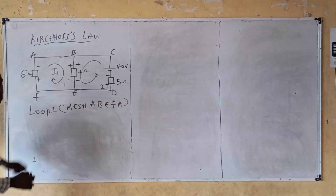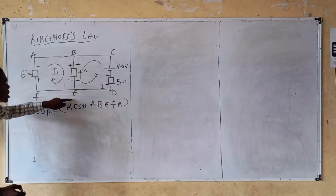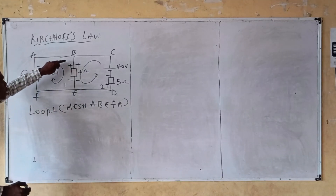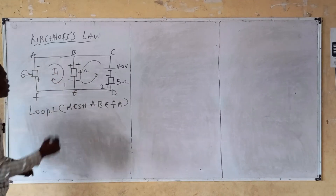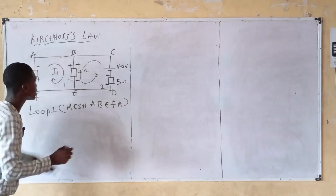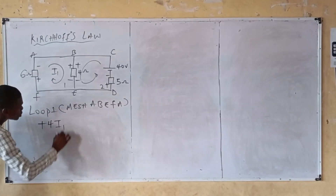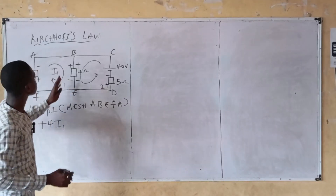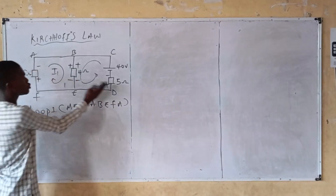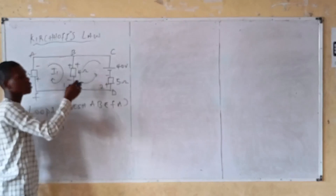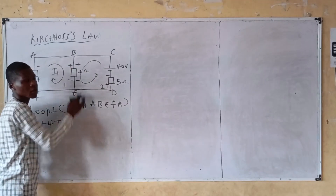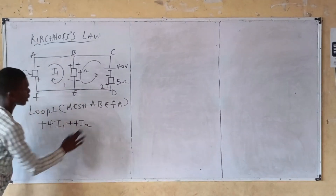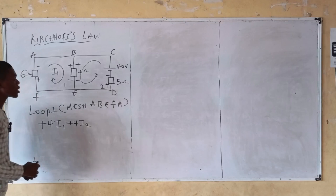Step two: applying KVL to loop one. Branch A-B: no circuit elements. Branch B-E: four ohm resistor for loop one. Going from positive to negative means there's a voltage gain, so positive four I1. The four ohm resistor is shared between loop one and loop two, and for loop two the polarity is also moving from positive to negative — a voltage gain — so positive four I2.